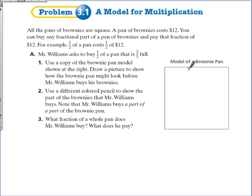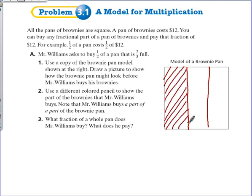So we take the brownie pan and cut it into three equal pieces. And we're going to draw diagonal lines to indicate that that's two thirds of your brownie pan.